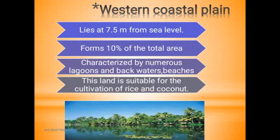The Western Coastal Plain is below 7.5 meters from sea level, forming the third region of Kerala. The coastal plains make up about 10% of the total area. There are many beaches in Kerala.